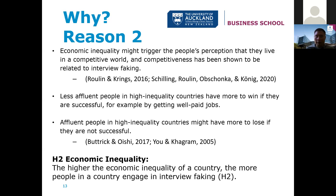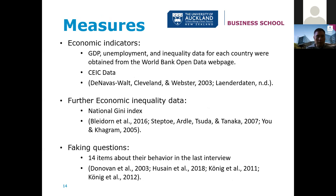Hypothesis two: the higher the economic inequality of a country, the more people in that country will engage in faking. To measure these things, we obviously used GDP — the team got data from the World Bank Open Data webpage, supplemented with information from the CEIC. We were able to get information on inequality through those two sources as well, and also used the National Gini Index. These are all established measures of both GDP and economic inequality.